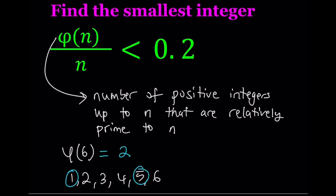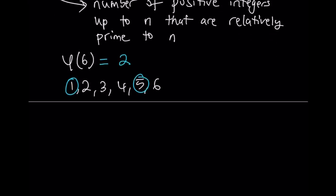So phi of n just counts those specific numbers. But how do you find it efficiently? Since phi of n counts positive integers relatively prime to n, we can say that if p is a prime number, then phi of p is always going to be p minus 1.